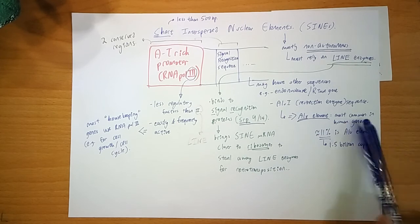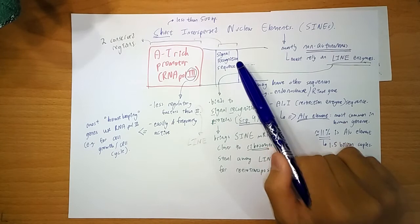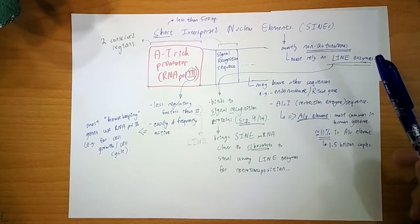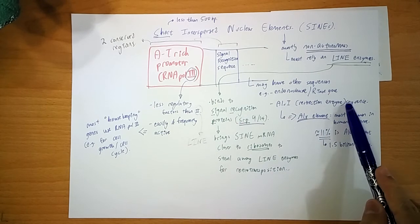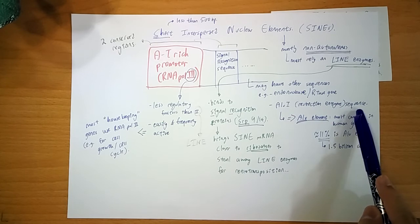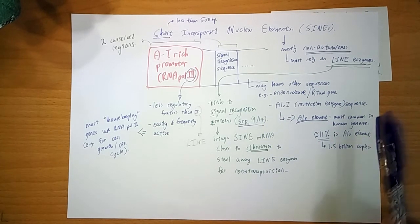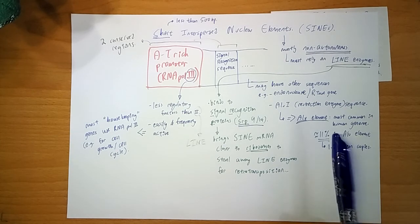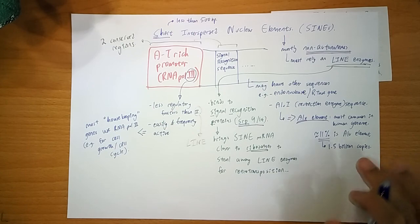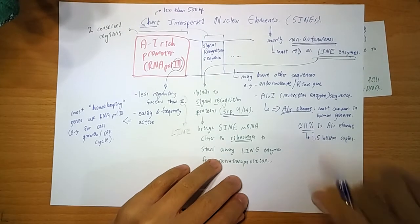And the most common one in the human genome is your ALU element. And your ALU element is a SINE. And it has this site that the restriction enzyme, your ALU1, recognizes. And it's very common. It's 1.5 billion copies and it makes up 11% of your entire genome. So that's a lot. Your LINEs make up 20% and your ALU makes up about 11%.